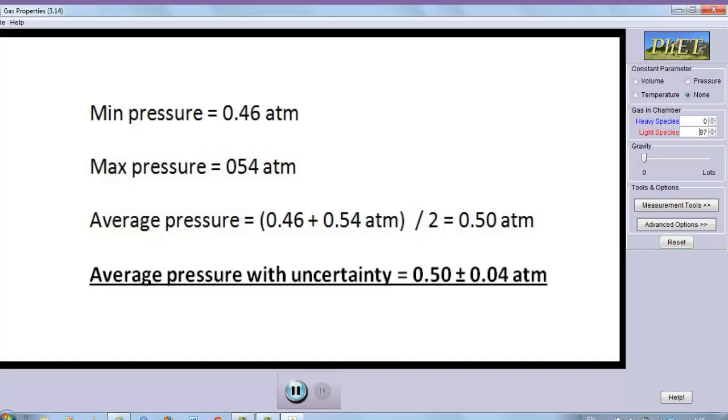I will also include the uncertainty. The uncertainty gives me the boundary, the lowest and highest value to which the pressure goes. I will state that the pressure inside the container right now is 0.50 atmospheres plus or minus 0.04 atmospheres. The plus or minus means if you subtract 0.04 from 0.5, you get the smallest value, and if you add 0.04 to 0.5, you get the largest value, 0.54 atmospheres.